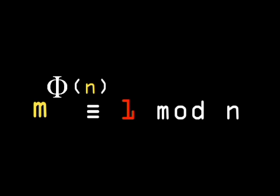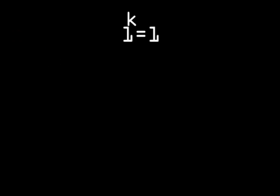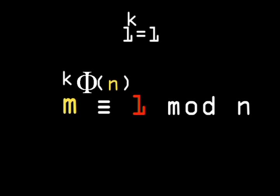Now, we just need to modify this equation using two simple rules. First, if you raise the number 1 to any exponent k, you always get 1. In the same way, we can multiply the exponent phi n by any number k, and the solution is still 1.